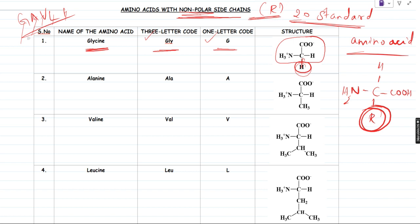The next amino acid is alanine — three-letter code ALA, one-letter code A. The R group is a methyl group, CH3. The next amino acid is valine — three-letter code VAL, one-letter code V. If you see the structure of valine, it is CH bonded to two CH3 groups. It looks like an inverted V and hence you can remember it as valine.